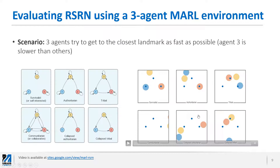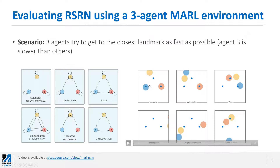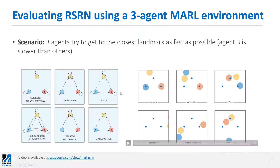To evaluate the effectiveness of the RSRN, we considered a three-agent scenario where each agent tries to get to the closest landmark as fast as possible. To make the environment more complex and unbalanced, we made agent number three slower than the other agents, so in most scenarios it's not possible for agent three to reach the closest landmark. We train the agents using six different RSRNs inspired from sociology literature, where the name of each network indicates its sociological implications — for example, the first being the survivalist or self-interested RSRN.